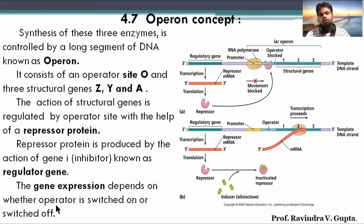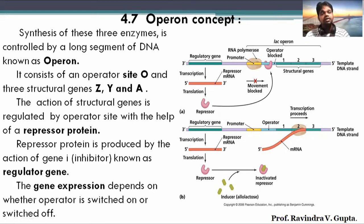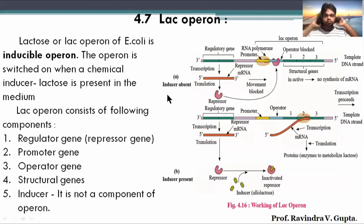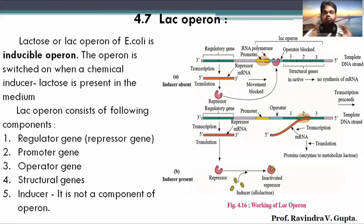The gene expression depends on whether the operator is switched on or switched off. The main aim of the operon is that these three structural genes should be formed to produce the necessary enzymes. This is the overall concept of the operon. The next part is a little bit new, so we will take it later. If there are any questions, please ask, then we will go further.